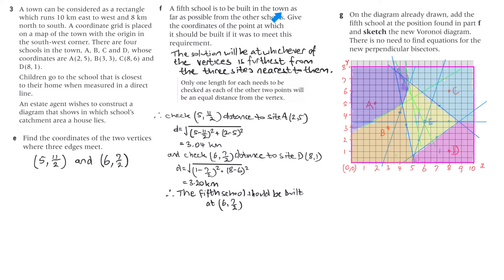Part F: a fifth school is to be built in the town as far as possible from the other schools. Give the coordinates of the point at which it should be built. The solution will be at whichever of the vertices is furthest from the three sites nearest to them. So for vertex (5, 11/2) we'll check the distance to A, B, and C, and for vertex (6, 7/2) we'll check the distance to C, B, and D.